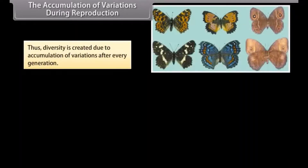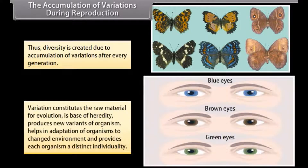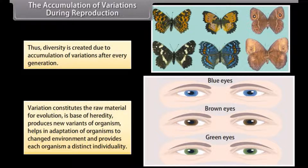This variation forms the basis of heredity. It produces new variants of organisms, helps in adaptation of organisms to a changed environment, and provides each organism a distinct individuality.